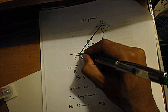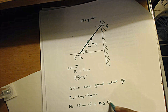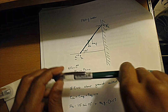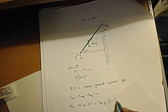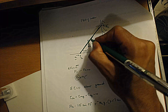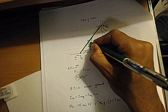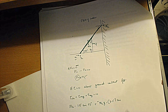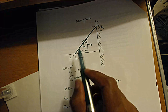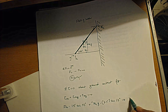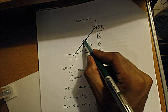The torque due to the weight of the ladder: the force is 30 pounds, and it acts at the midpoint, which is 7.5 feet up. It rotates the ladder clockwise, so it's negative. The angle here — since 90 minus 53 is 37 — is 37 degrees. So that term is negative 30 times 7.5 times sine 37 degrees.